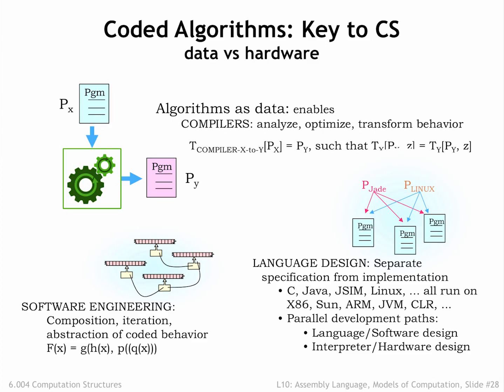So what have we learned from the mathematician's work on models of computation? It's nice to know that the computing engine we're planning to build will be able to perform any computation that can be performed on any realizable machine. And the development of the universal Turing machine model paved the way for modern stored program computers. The bottom line? We're good to go with the Beta ISA.